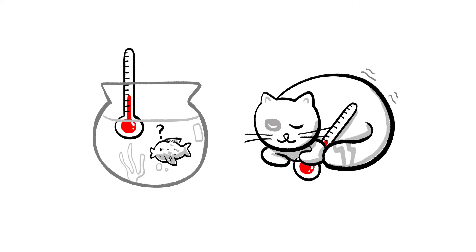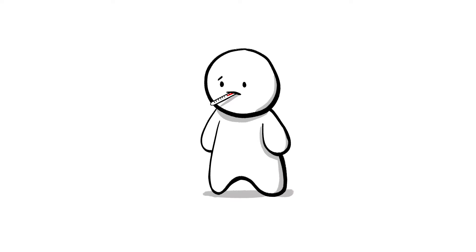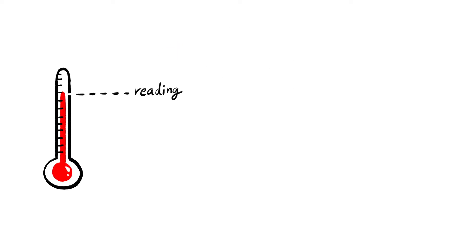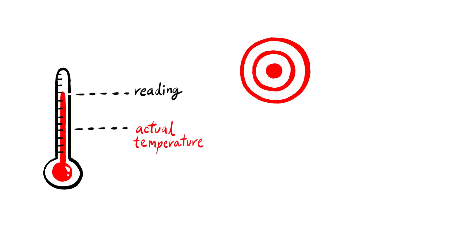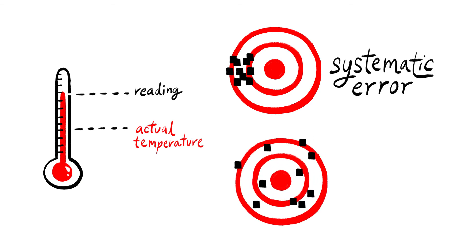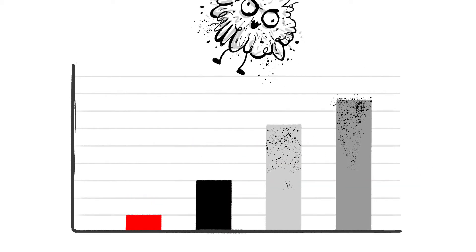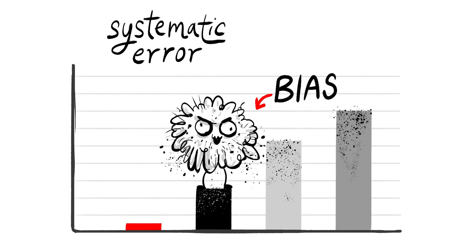Imagine you have a thermometer that always gives readings that are five degrees higher than the actual temperature. Every measurement you take with it will be wrong. Because there's a pattern in the way this error arises, it's systematic rather than random. In science, any systematic error is called a bias.